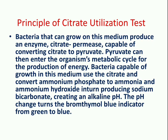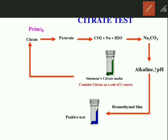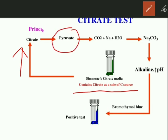The pH change causes the bromothymol blue indicator to change from green to blue in color. Here we can see the Simmons citrate media which is uninoculated, that is green in color, containing carbon as a source. When the bacteria are inoculated into the medium, the citrate permease enzyme is produced, which changes citrate into pyruvate. The pyruvate, during production of energy, utilizes carbon dioxide, sodium, and water to produce sodium bicarbonate, which is alkaline in pH.